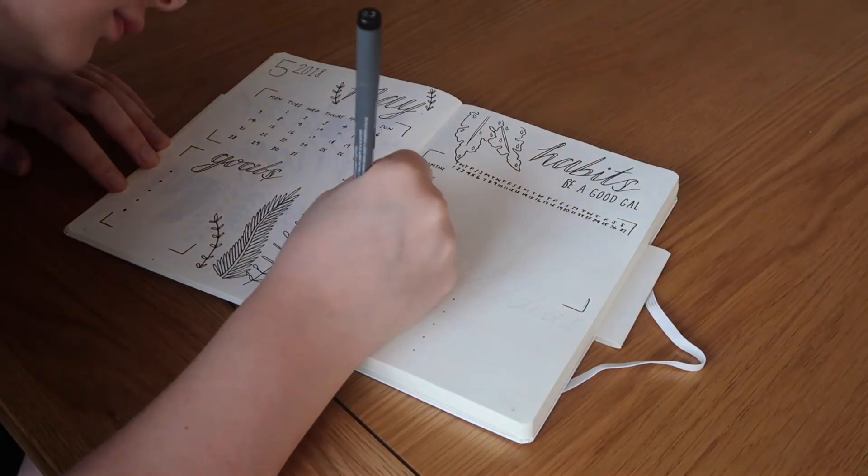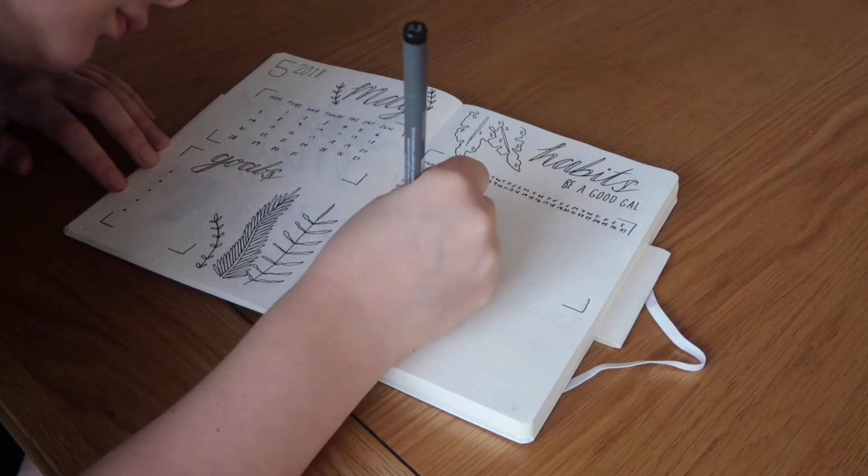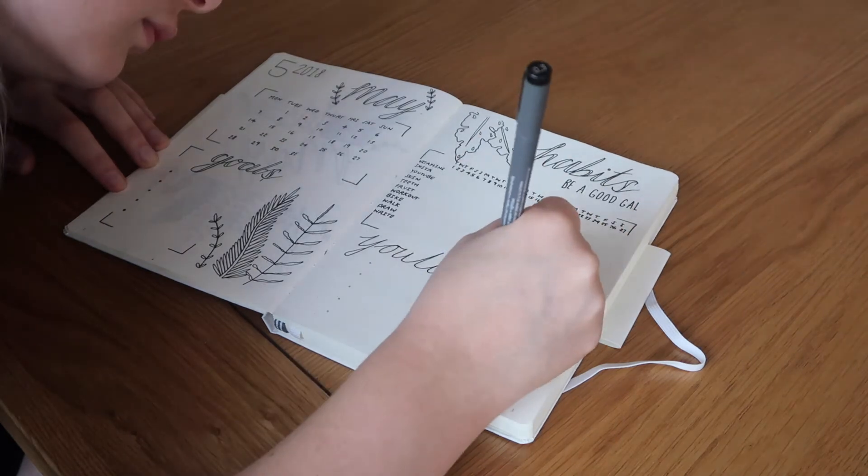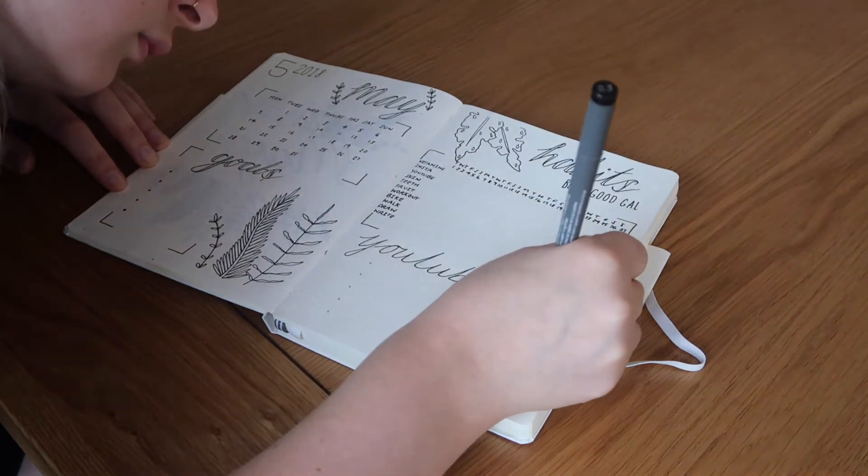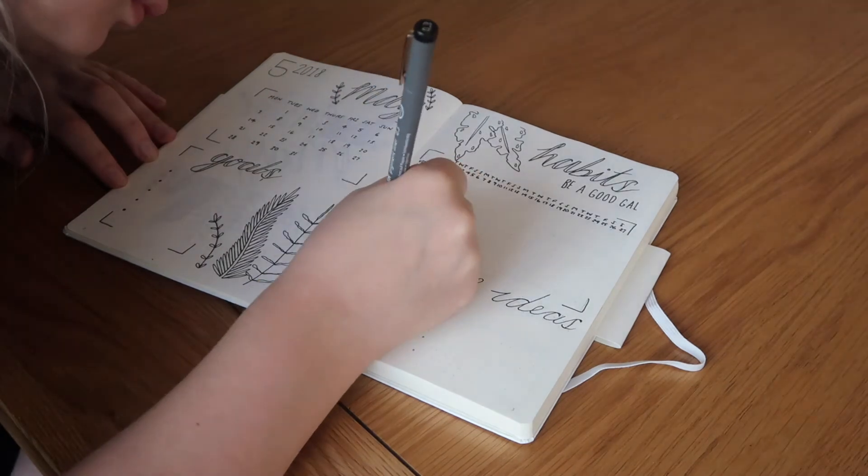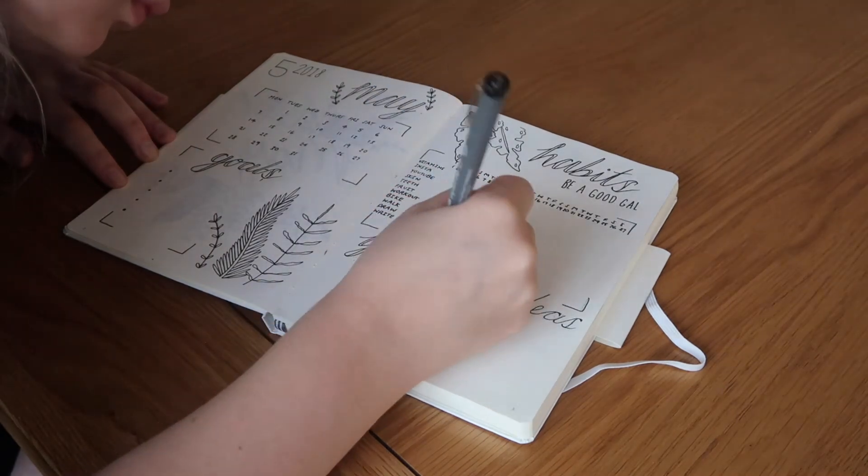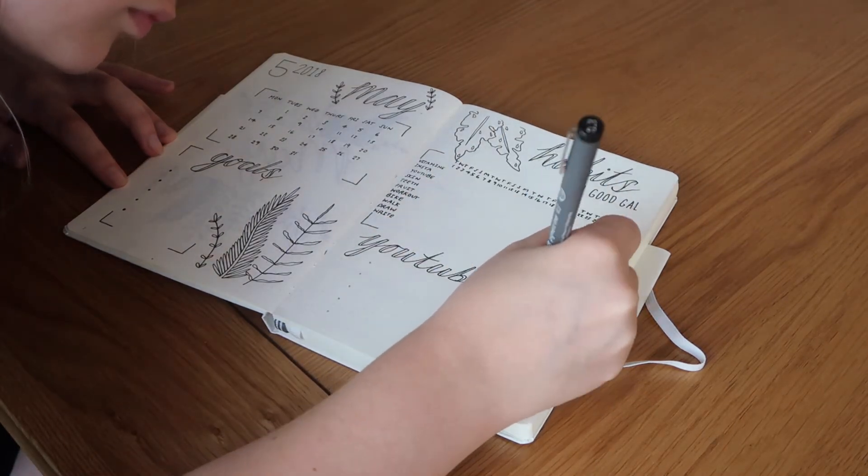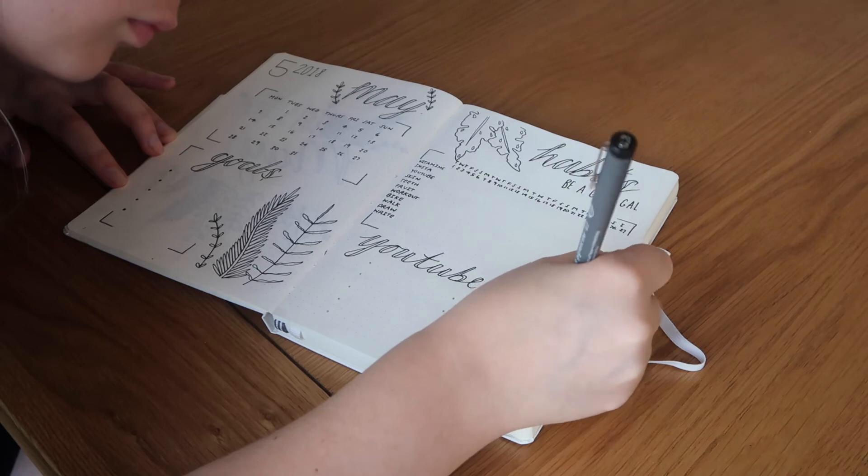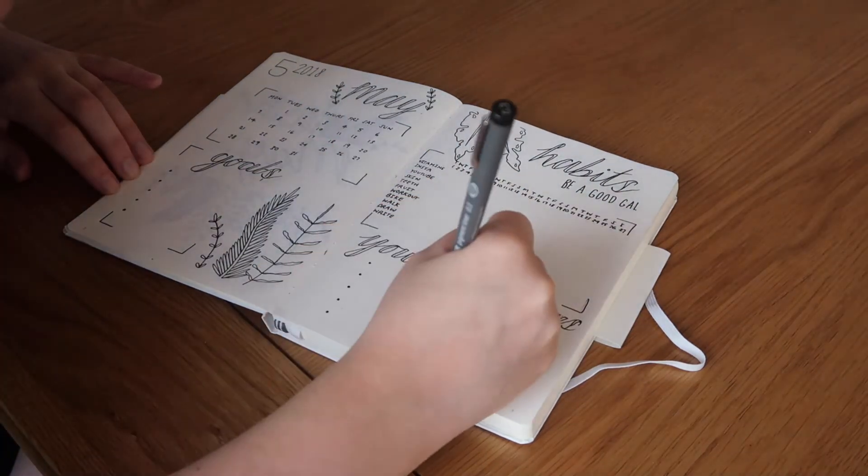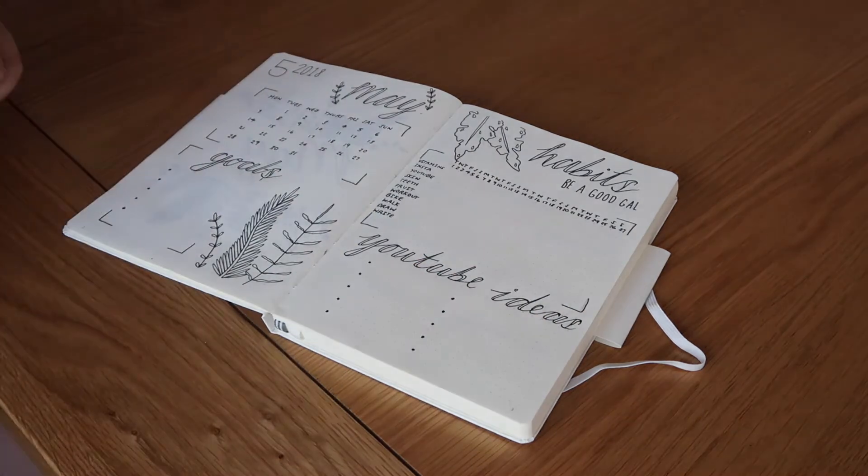So on the next bit of the page I literally just did a YouTube ideas section. I always write down YouTube video ideas in my notes on my phone and I just thought it'd be nice to write them down in the bottom of this and I can sort of put a line through it or take it off if I've actually done that video. And then if I have no video ideas in the future I can return to this page and find an idea on what to film.